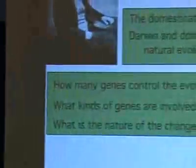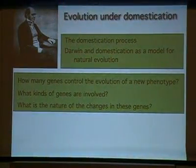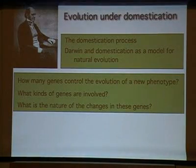What I'm going to do today — this is the 200th anniversary of Charles Darwin's birth and the 150th anniversary of the publication of The Origin of Species. I'm going to talk about Darwin and how he used domestication as a model or analogy for evolution in nature, and look back at what we've learned about the genetics of domestication in crop plants and how well that conforms to Darwin's ideas.